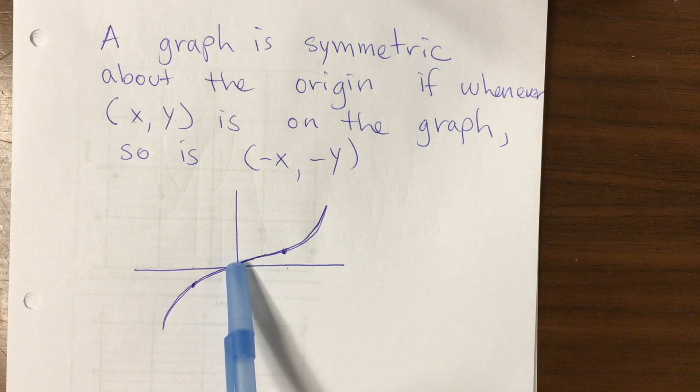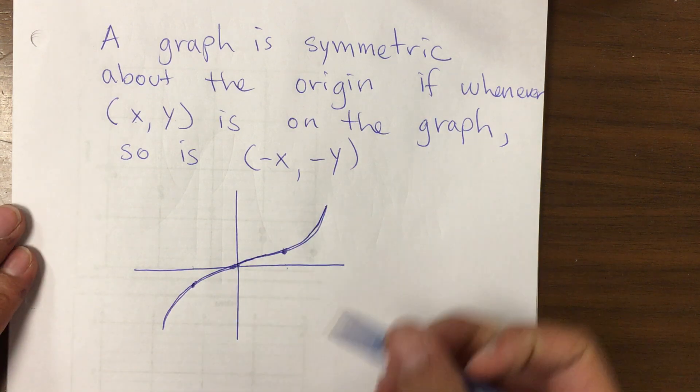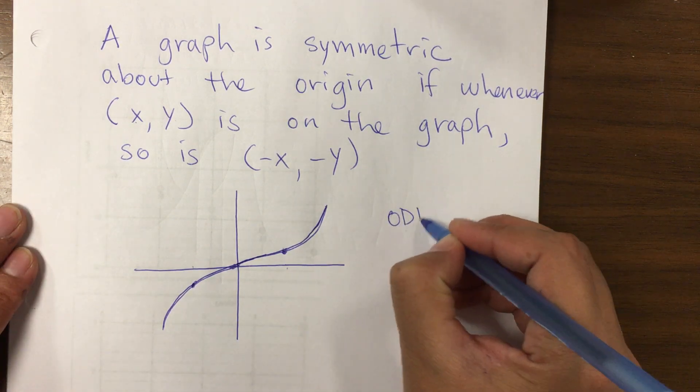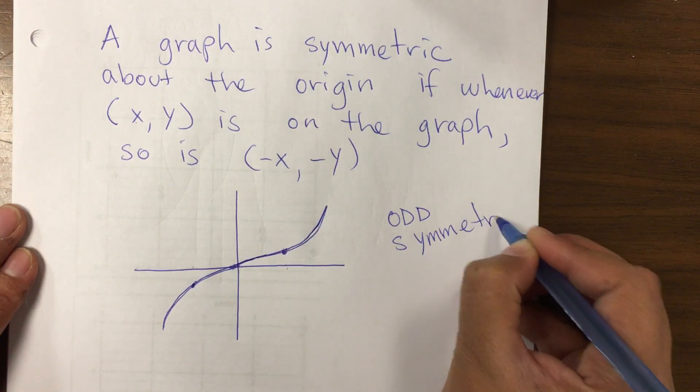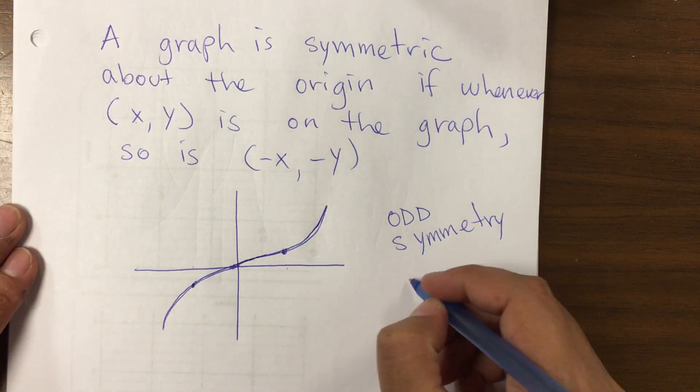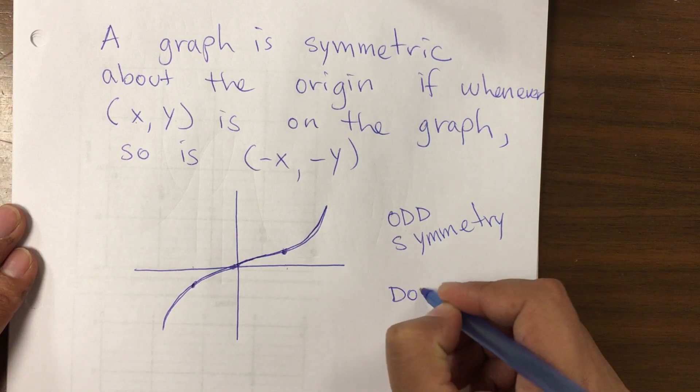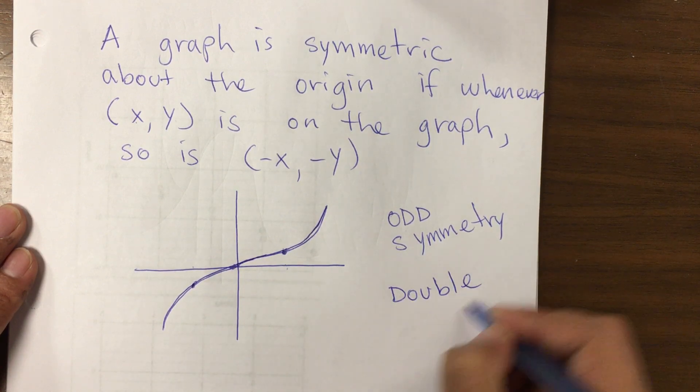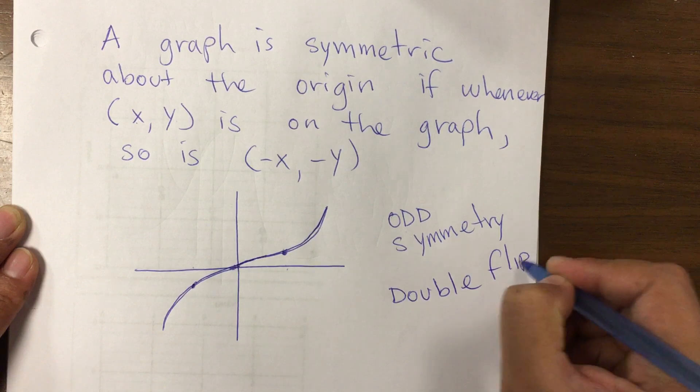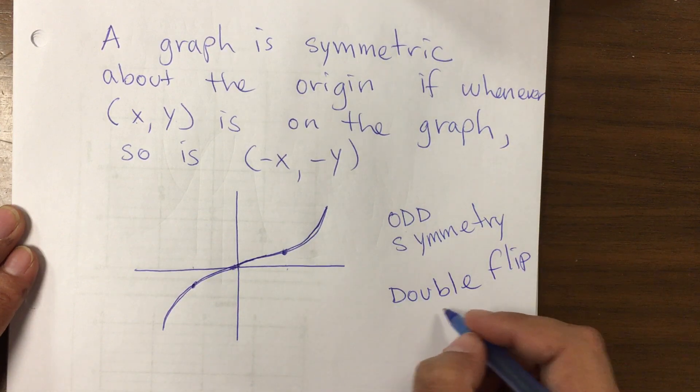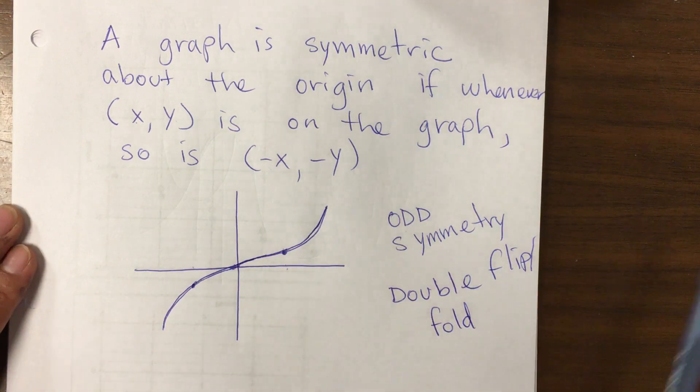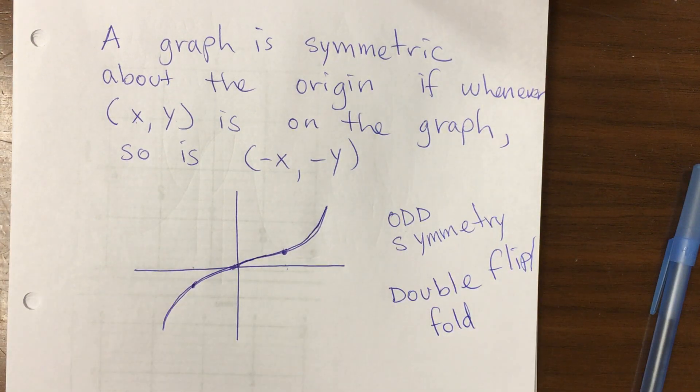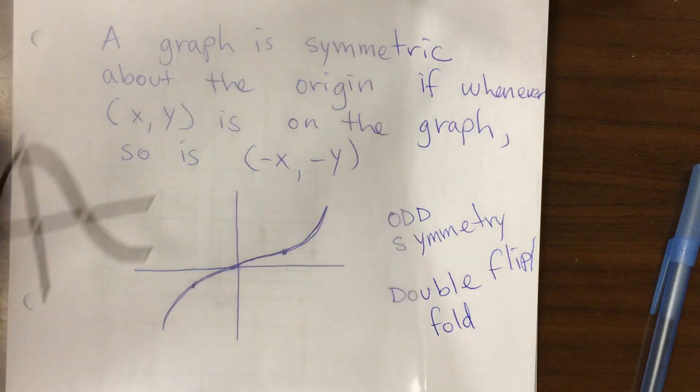Then that's called odd symmetry. And it has double flip or double fold. And I'm gonna show you with the transparency what that means.